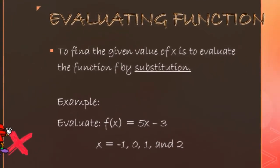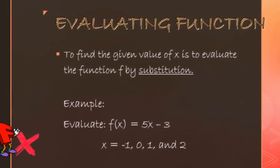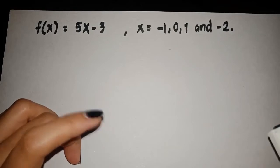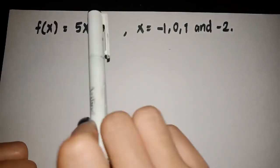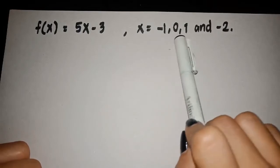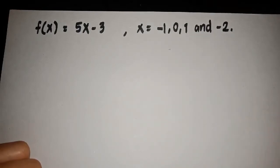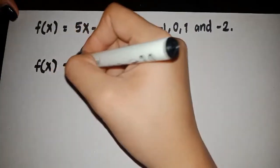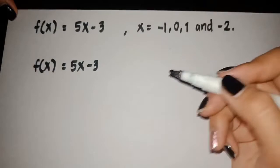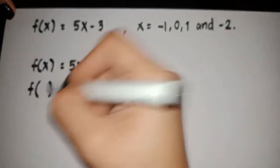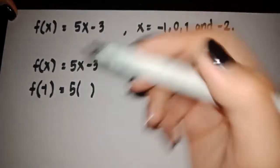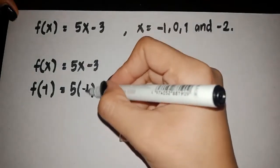To evaluate the function f, we find the given value of x by substitution. We have the given function f(x) = 5x − 3, and the values of x are −1, 0, +1, and −2. To evaluate and find the value of x, we substitute. Let's change x with the first given value, which is −1.